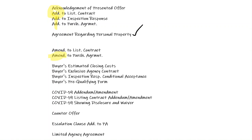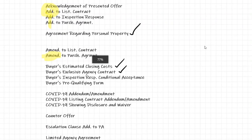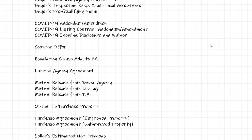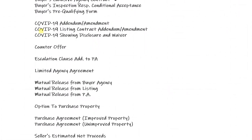We've got estimated closing costs so that your buyer can get some idea, when making an offer on a property, what it's actually going to cost them. Now if he's getting a loan, he should be getting a loan estimate form, which is probably a much better answer. Here's the buyer's agency form, which we haven't really talked about yet. We also have the inspection response, and a buyer's pre-qualification form, plus some new COVID-related forms that came out during that issue.